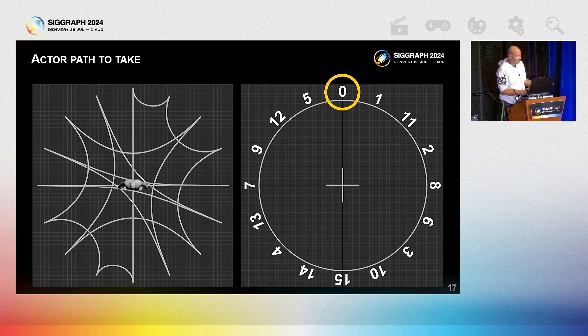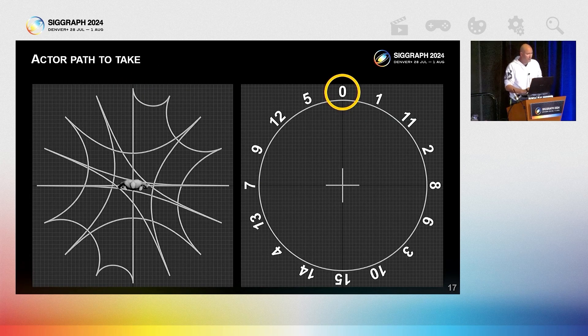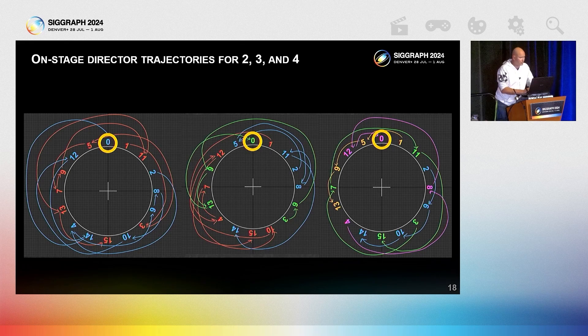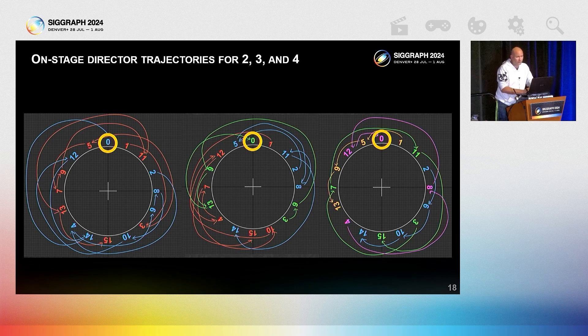The order of events is simple. Actor starts at zero and navigates to edges one by one. To drive this, we introduce on-stage directors. Their job is to call actor to edges of loop. We've had most success with three directors, but also solved for two or four.